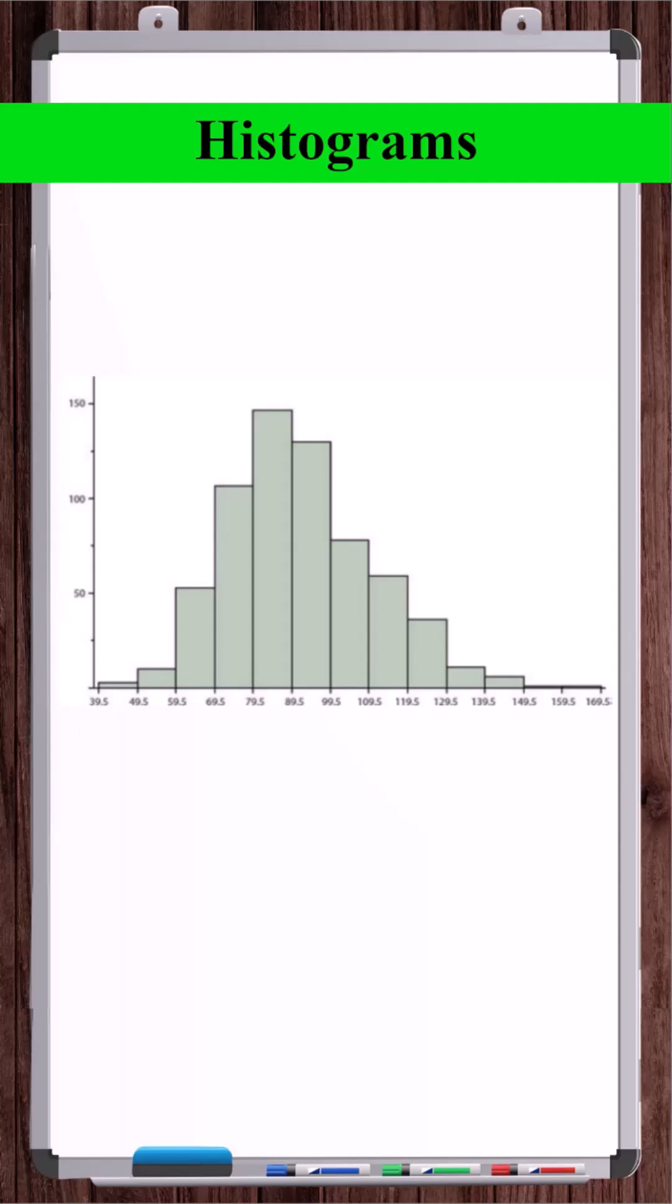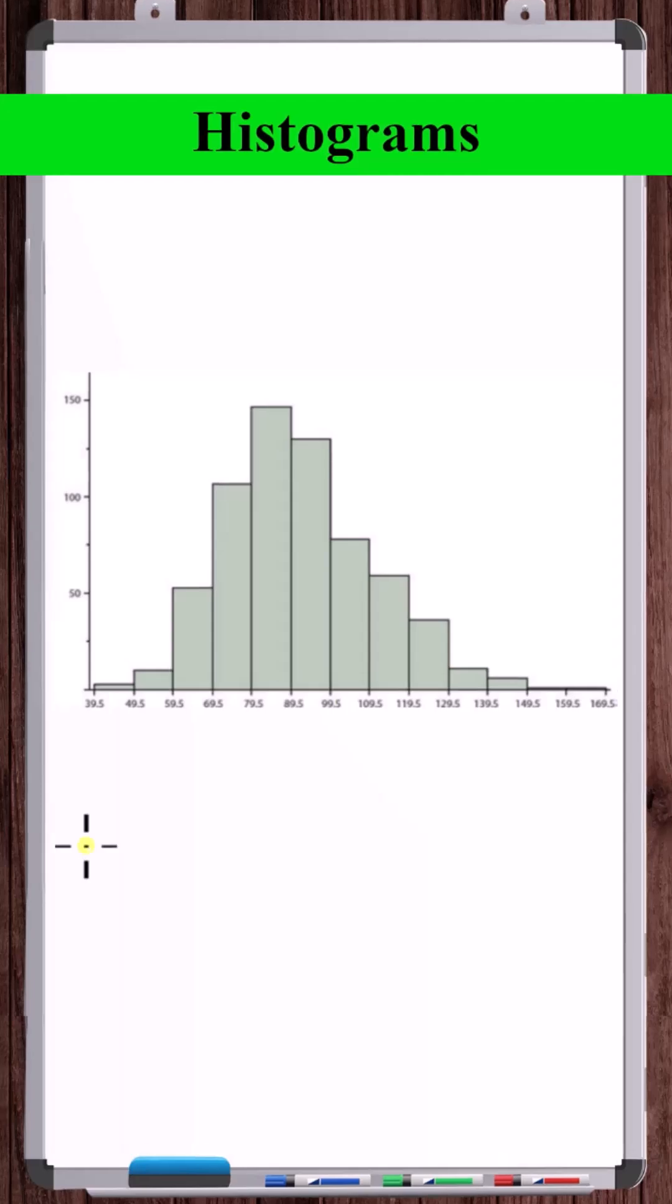For example, this histogram could be based on a single list of weights or heights. With any list of numbers, you can calculate statistics like the average, standard deviation, median, mode, range.